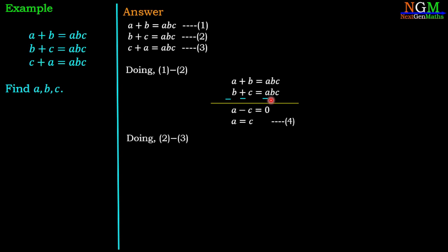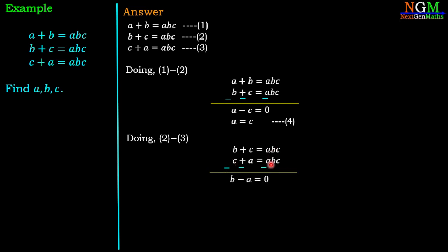In the second step we take the subtraction of equation 2 and equation 3. We have (B plus C) minus (C plus A) equals ABC minus ABC. C cancels with minus C, and ABC cancels with minus ABC. This gives B minus A equals 0, therefore B equals A — equation 5.